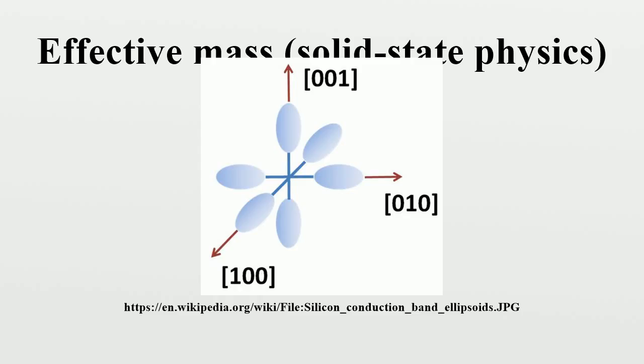The electronic effective mass can be seen as an important basic parameter that influences measurable properties of a solid, including everything from the efficiency of a solar cell to the speed of an integrated circuit.